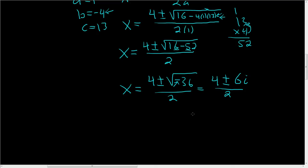To finish, just break it up. So this is actually going to be x equals 4 over 2 plus or minus 6i over 2. So that's 2 plus or minus 3i. And so those are the other two roots.